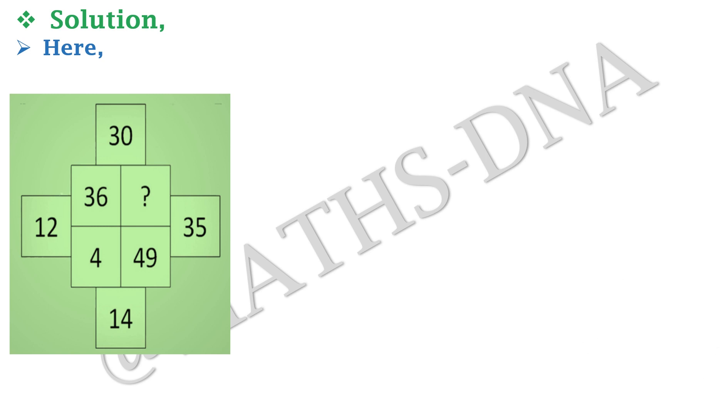It is given to us that the numbers are arranged as 30, 12, 35, 14, and inside the box 36, 4, 49, and the missing number. Always remember, there are two patterns in such questions. One that is for the inner box and the second that is for the outer box.